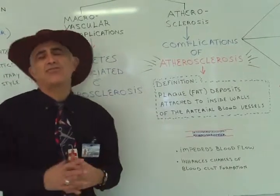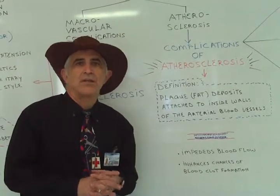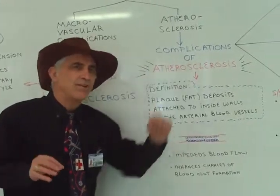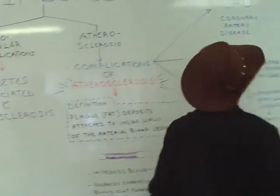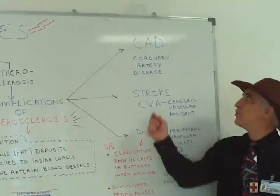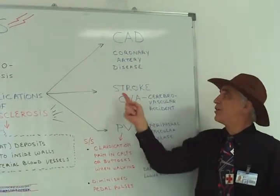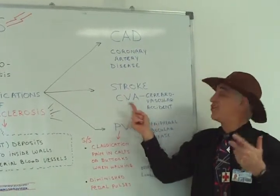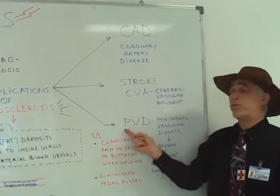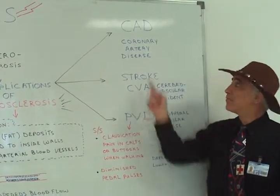If we consider atherosclerosis the tree, let us look at the branches. The branches will be three: CAD — coronary artery disease; CVA — cerebral vascular accident, which is a stroke; and peripheral vascular disease, PVD.